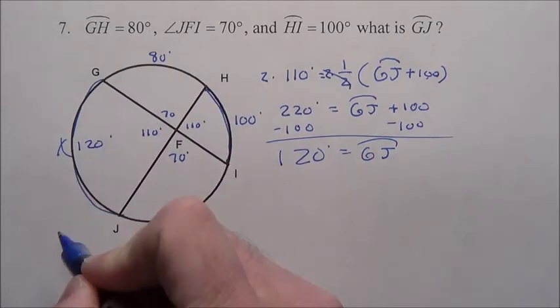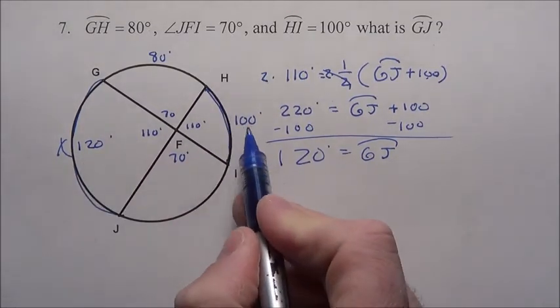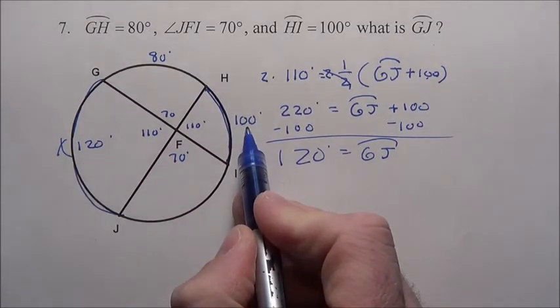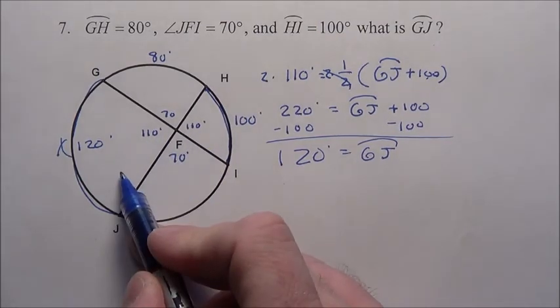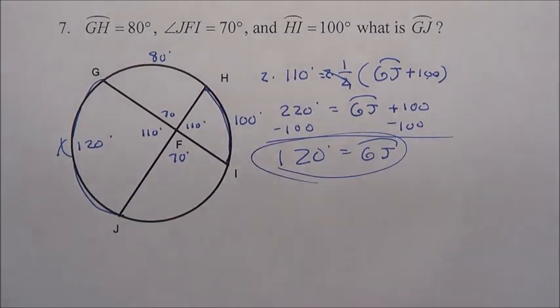it's obvious that your answer is 120 degrees. This guy here has to be 120, because 120 plus 100 is 220, and half of that gives me the 110. And that's how we get problem number seven.